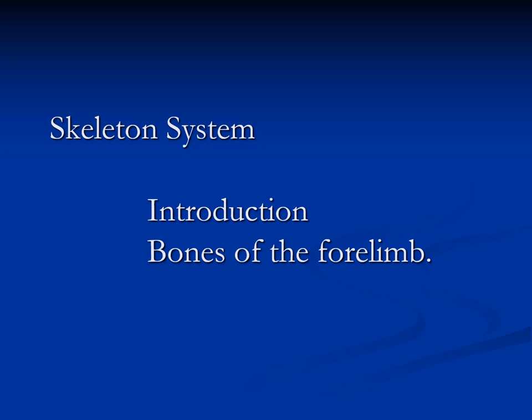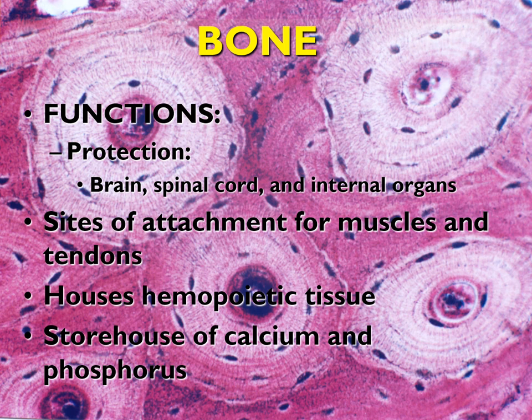Good morning. Today I'm going to talk about anatomy of the lung bone and then the bones of the forelimb. As you know, bone has several functions. One of these functions is protection — our heart and brain are surrounded by bones, which protect these delicate organs. Another function is as a site of attachment for muscles and tendons. Every muscle in our body attaches from one bone to another. Also, bone is the house of hematopoietic tissue — inside the bone we have bone marrow, responsible for production of red and white blood cells. The bone is also the storehouse of calcium and phosphorus: whenever our body needs calcium and phosphorus, there is breakdown of bones; whenever there is excess calcium and phosphorus in the blood, there is formation of bone.